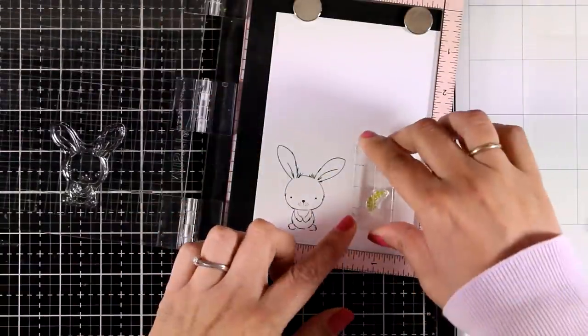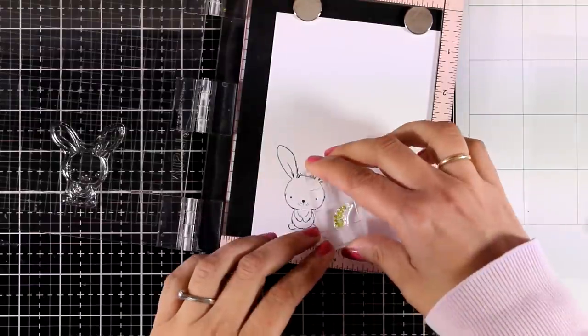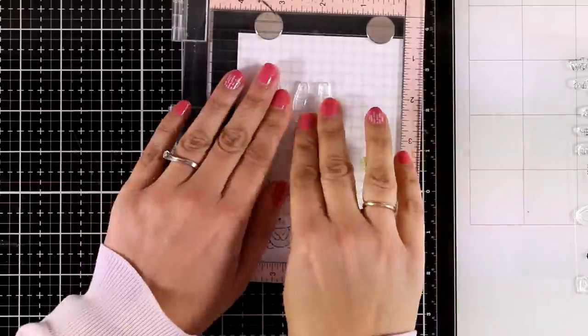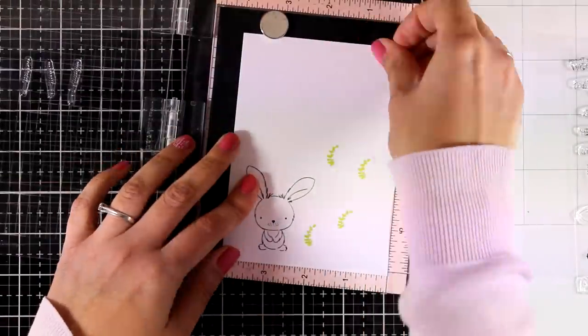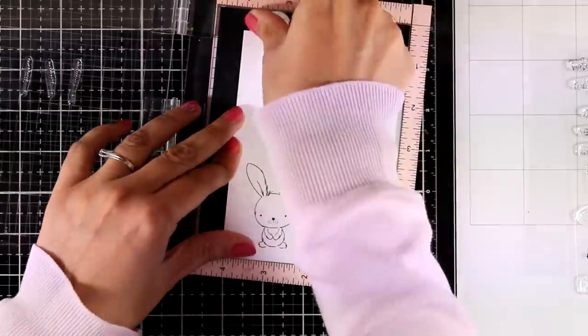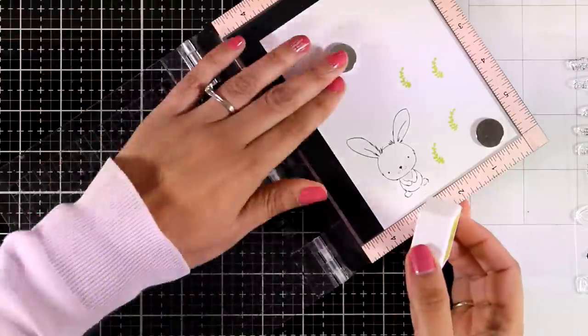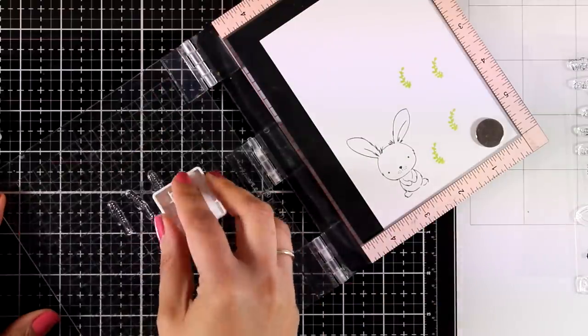So for this one I'm going with a new stamp set which is called Sweetest Some Bunny. It is absolutely adorable. It features this lovely bunny and two more in different positions and I'm also going to stamp some of the grass and the flowers that come in the same stamp set.